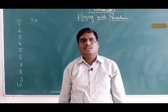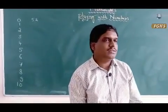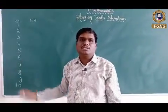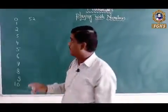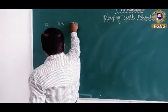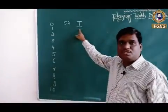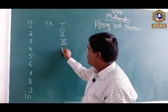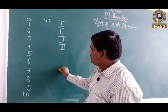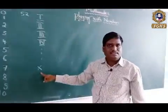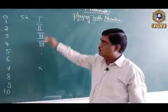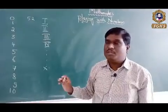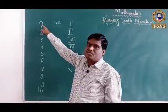In old days, in the Roman period, they started representing numbers in Roman format. For example, this was for 1 — even today we use this — then 2, 3, 4, and it goes on like this till 10. This Roman number system had some disadvantages because they did not have the concept of zero.